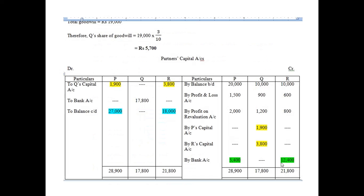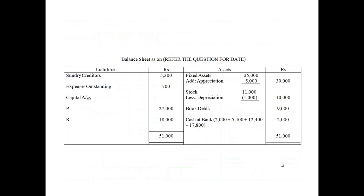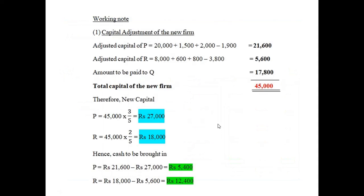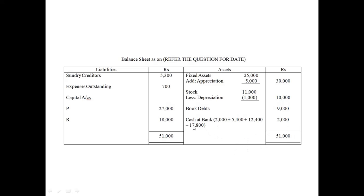Regarding the balance sheet: the existing cash was 2,000. P will bring in 5,400, R will bring in 12,400, and Q will be paid 17,800. The total cash brought in by P and R is 17,800, which exactly covers Q's payment. This confirms the calculation is correct.